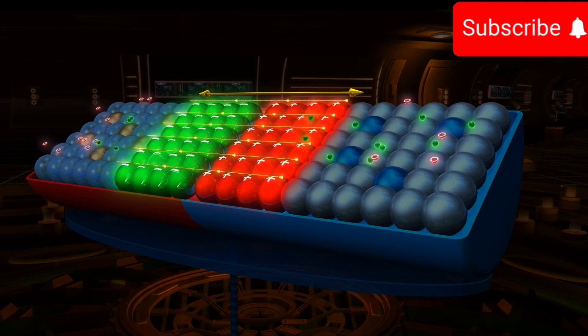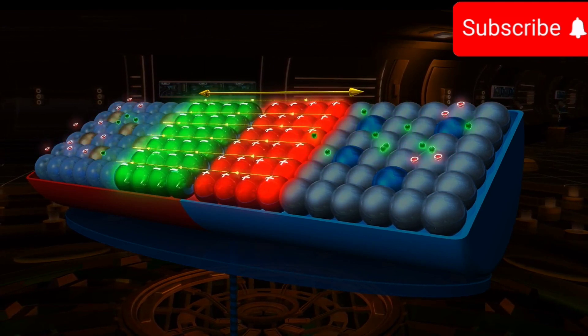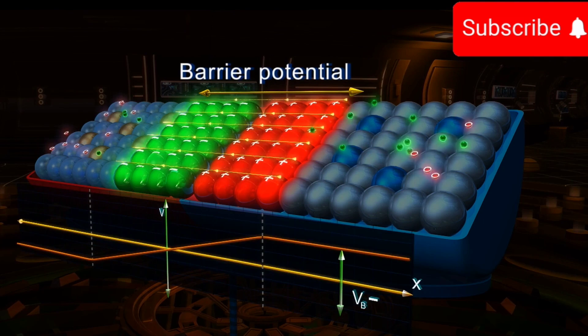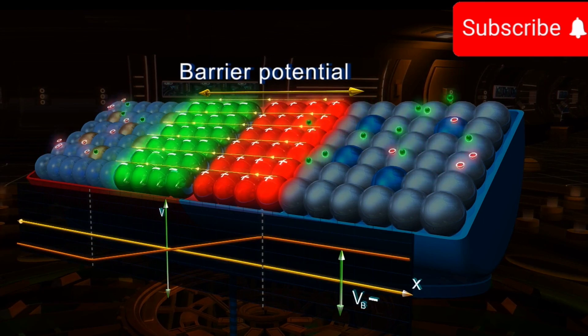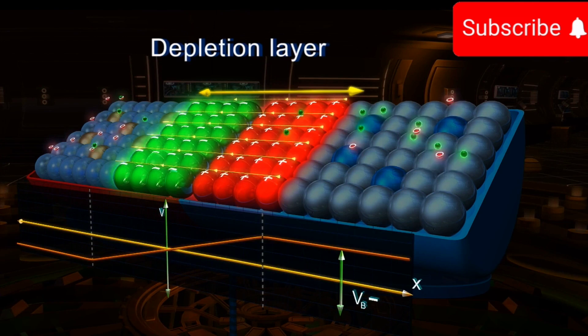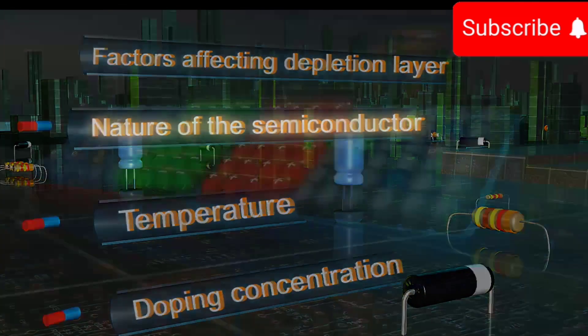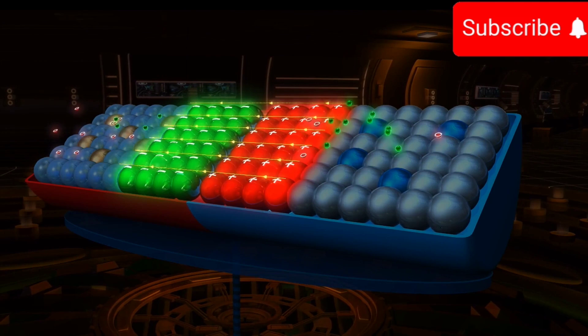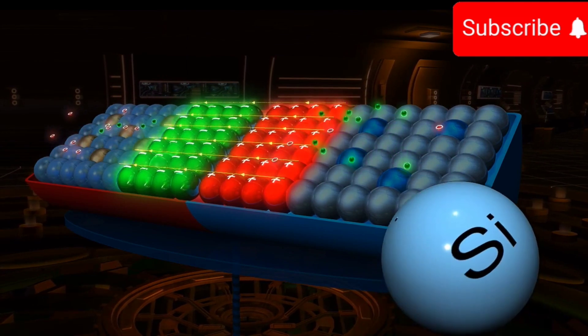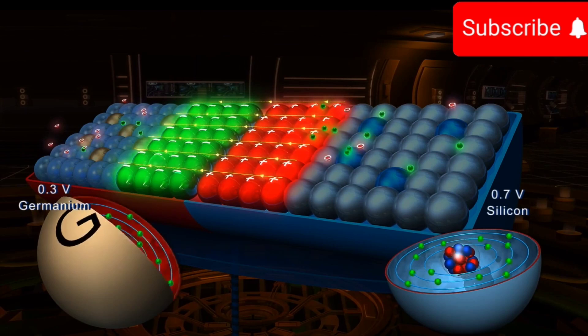The depletion layer gives rise to an opposing potential difference called the barrier potential across the junction. The width of the depletion layer and the potential barrier depend on the following factors. Nature of the semiconductor: The value of the barrier potential for silicon is 0.7 V and for germanium 0.3 V.